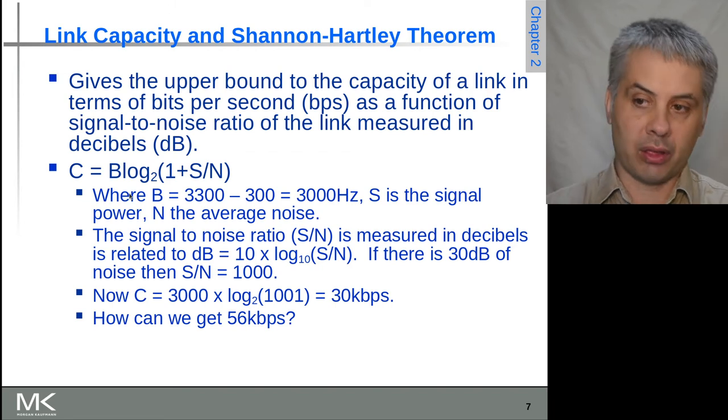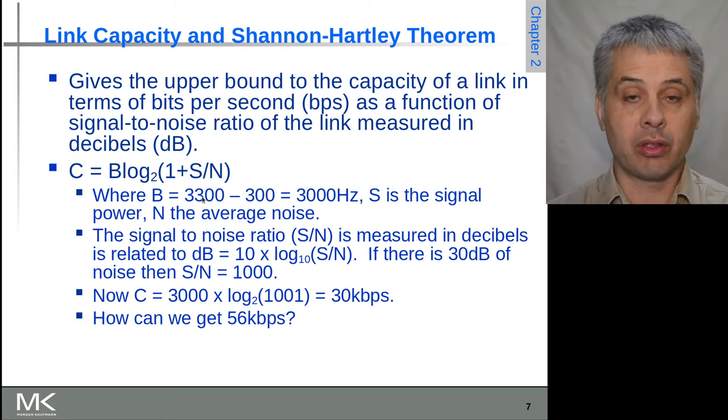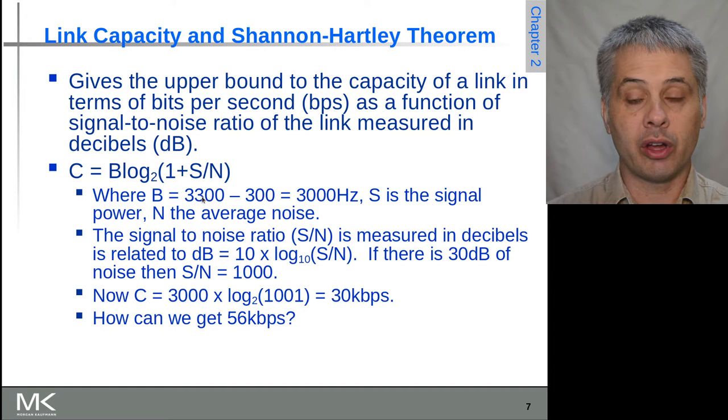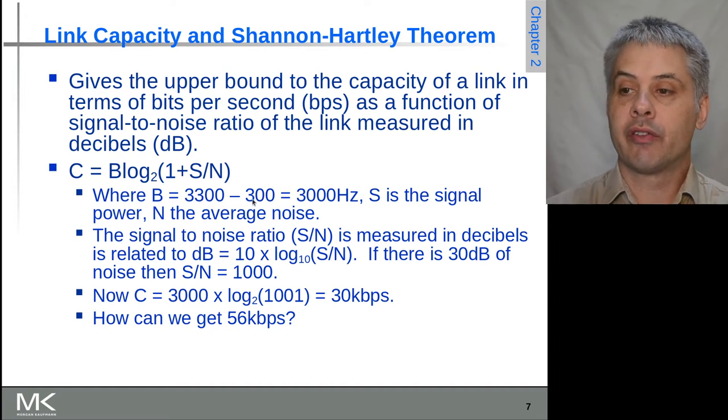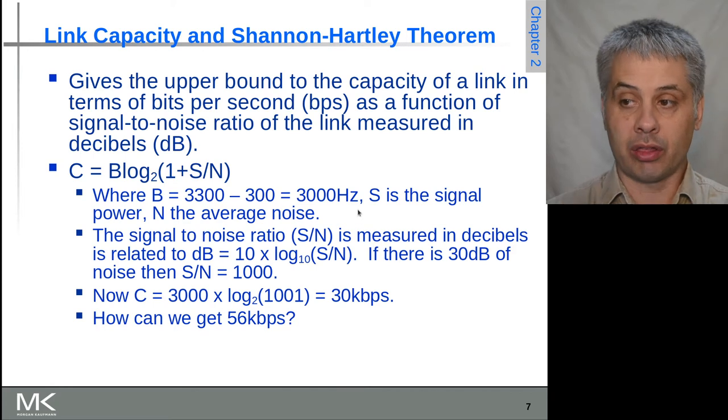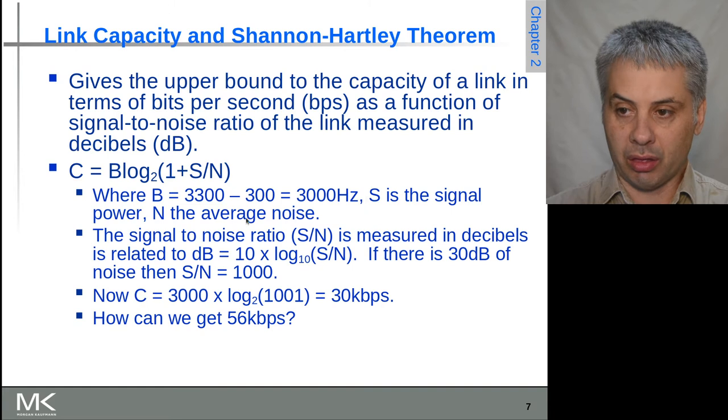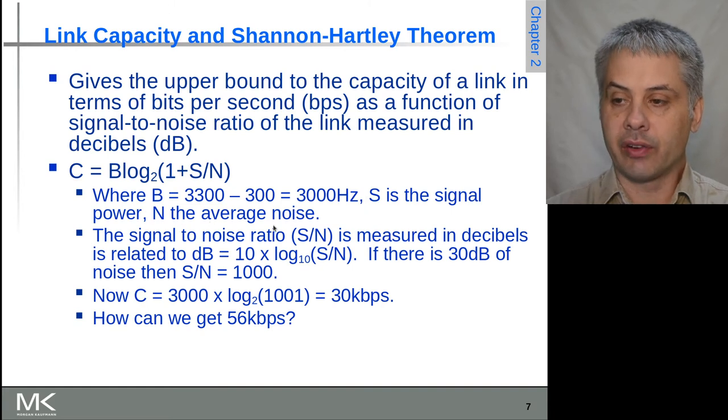For example, if we had a bandwidth that went between 300 Hz and 3300 Hz—this is essentially what old telephone lines used to be capable of—if we take away 300 from 3300 that leaves us with 3000 Hz or 3 kilohertz. S is the signal power and N is the average noise.